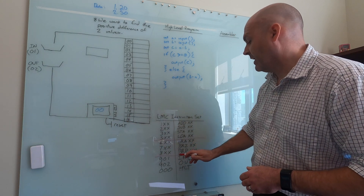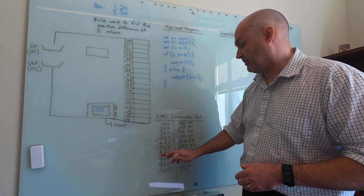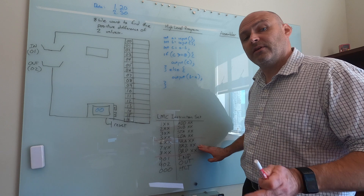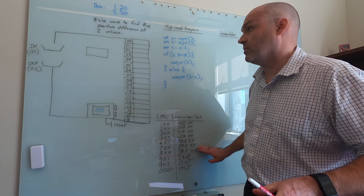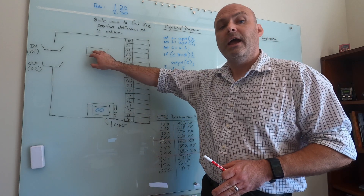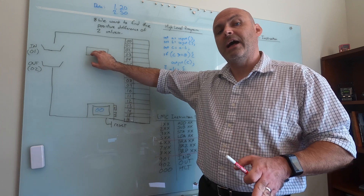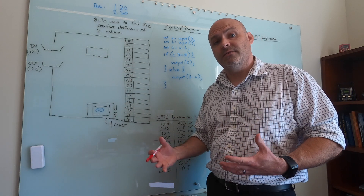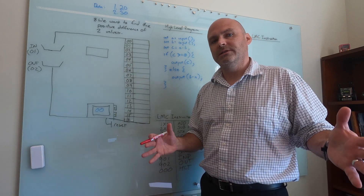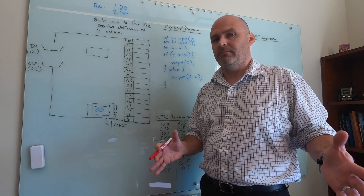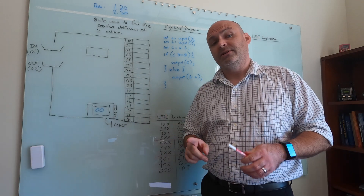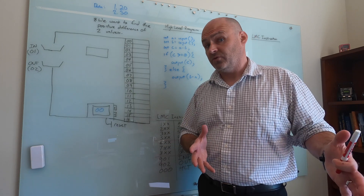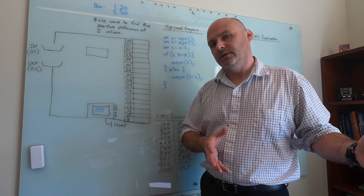The last instruction is branch on positive, opcode eight. This is very similar to branch on zero, except in this conditional circumstance the little man branches if the value in the accumulator is zero or anything positive. Remember that zero is included in positive numbers — in two's complement, any positive number is in the first half of the range and includes zero.